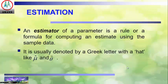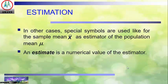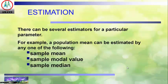An estimator is usually denoted by a parameter with a hat, like mu-hat or theta-hat. In other cases, special symbols are used, like the sample mean x-bar as the estimator of the population mean mu. The estimate is a numerical value of the estimator. So there can be several estimators of the population mean, including the sample mean, the sample median, the sample mode, or the sample mid-range. Similarly, there can be several estimators of the population variance — the sample variance defined with denominator n minus 1 and that with denominator n are two estimators of the population variance.